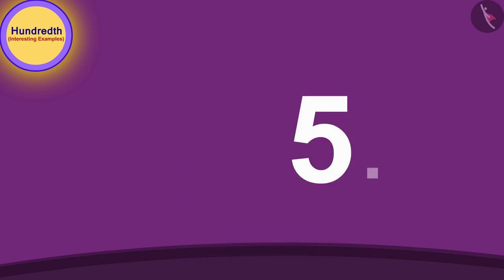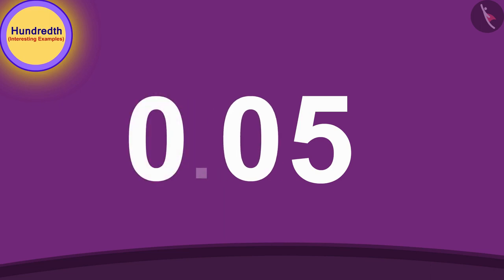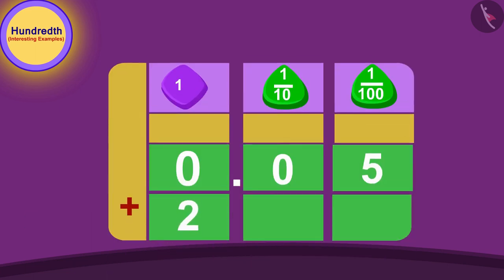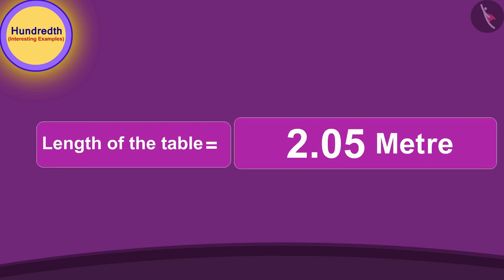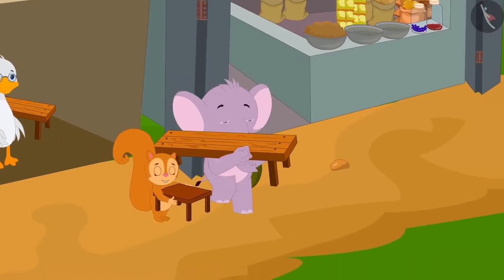Starting from the end of five, first, according to the procedure taught by uncle, and then because five is made up of only one digit, we will once again move the decimal point to the left by adding a zero. In this way, five centimeters is 0.05 meters. Adding two meters to it, the length of the table is 2.05 meters. Chanda and Appu bought their tables and happily returned home.